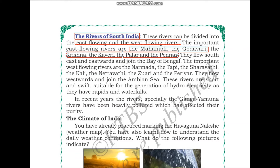The east-flowing rivers flow southeast and eastwards and join the Bay of Bengal. The important west-flowing rivers are the Narmada, Tapi, Sharavati, Kali, Netravati, Zuhari, and Periyar. These rivers flow westwards and join the Arabian Sea.